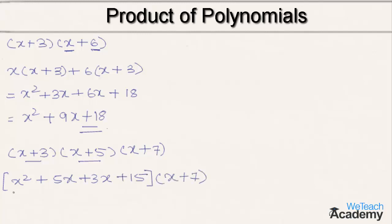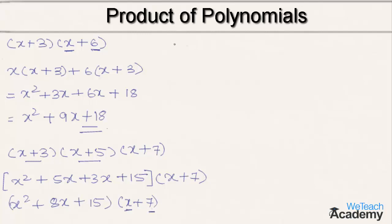We can write this as x squared plus 5x plus 3x, which is 8x, plus 15, all into (x + 7). Now let us multiply this whole group with each and every term of (x + 7).